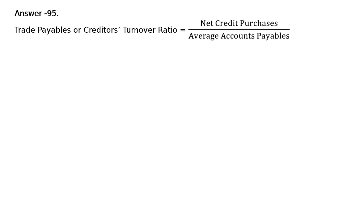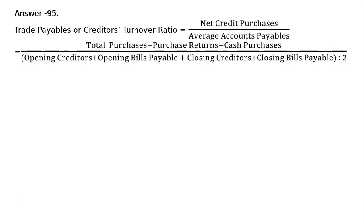Question 95: Calculate trade payables turnover ratio from the following information. Trade payables or creditors turnover ratio is equal to net credit purchases divided by average accounts payables.